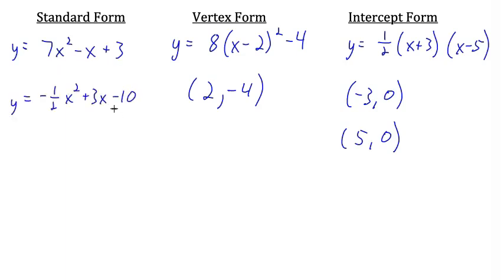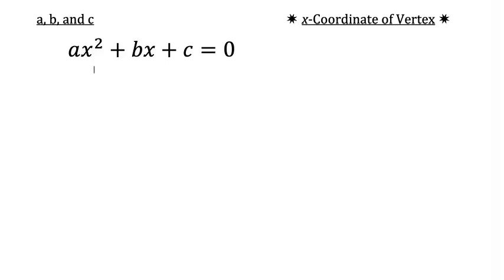Here are two equations written in standard form: y equals 7x squared minus x plus 3, and y equals negative 1 half x squared plus 3x minus 10. The standard form of a quadratic equation is ax squared plus bx plus c equals 0, where a, b, and c are the coefficients of x squared, of x, and the constant term. Those will be important for several applications when working with quadratic equations written in standard form.